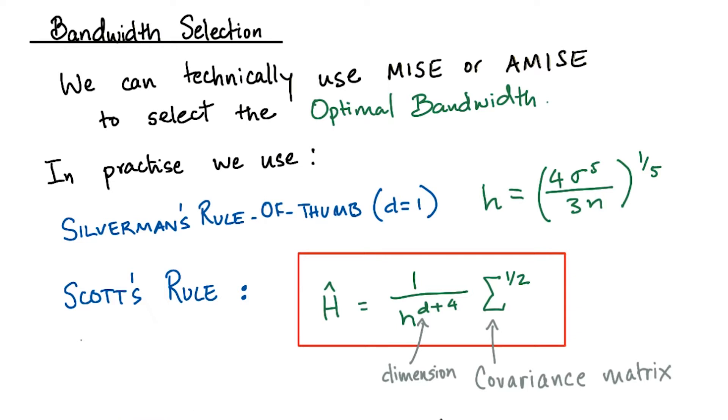A more generalized way to obtain a bandwidth is given by Scott's rule.